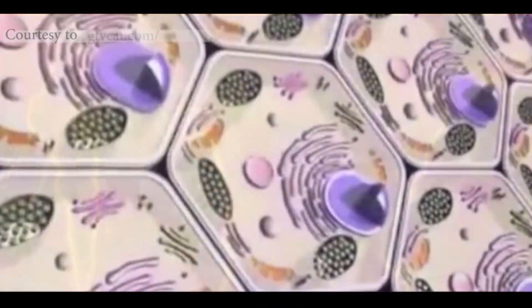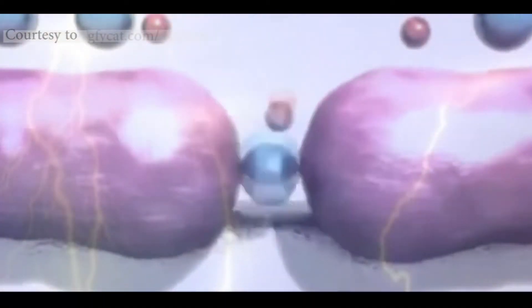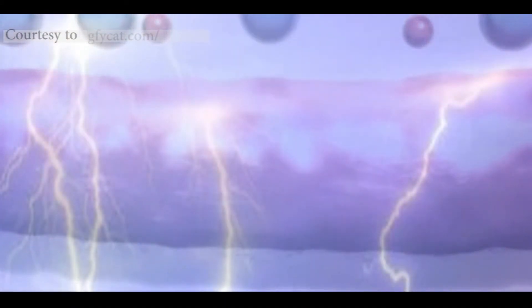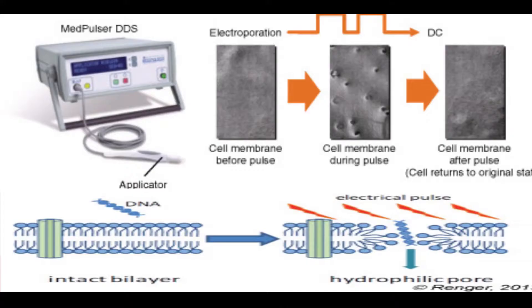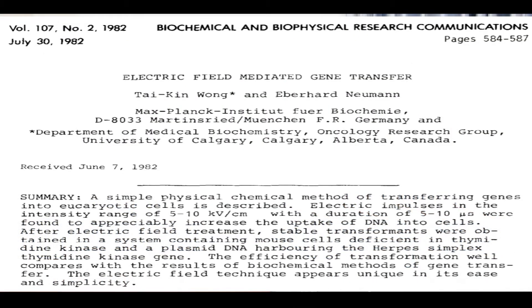The first one is electroporation. It involves the generation of transient nanometre sized pores in the cell membrane by exposing cells to a brief pulse of electricity. DNA enters the cell through these pores and is transported into the nucleus. This technique was first applied to animal cells by Wong and Newman in 1982, who successfully introduced plasmid DNA into mouse fibroblasts. The basis of electroporation is the relatively weak hydrophobic or hydrophilic interactions of the phospholipid bilayer and the ability to spontaneously reassemble after disturbance.